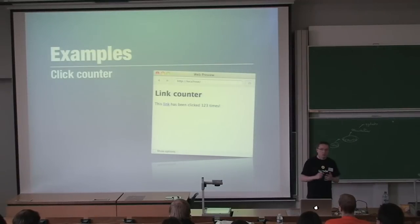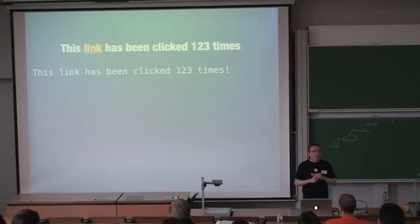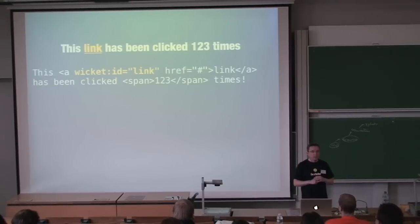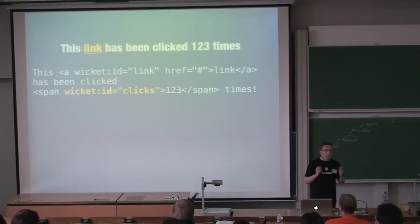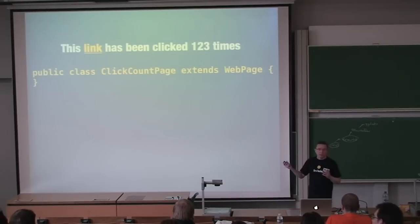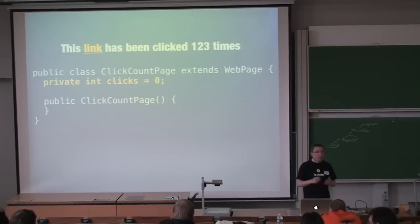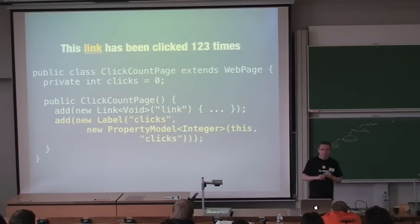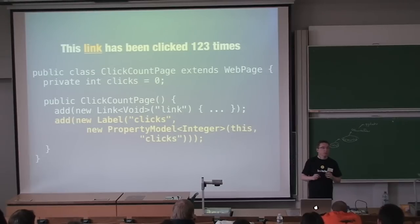A more complex example — a link counter: a link that counts the number of times it's been pressed. We add markup with a Wicket link identifier and a span with a label identifier. In Java, we create a page constructor, provide it with a click count, create a Link that increments the count on click, and provide a Label with the id 'clicks' bound to the clicks field using a PropertyModel. The PropertyModel provides data for the label.